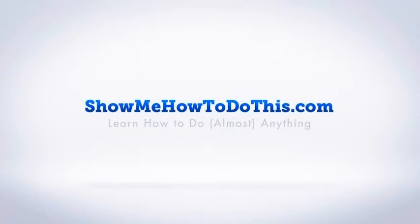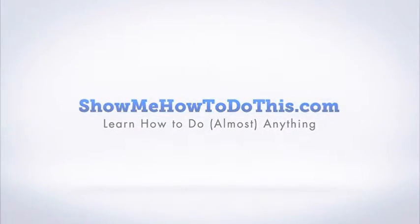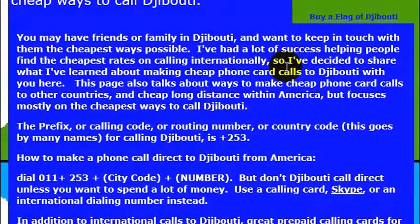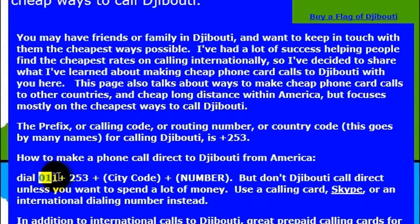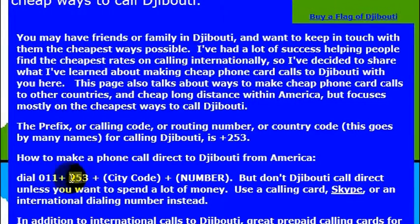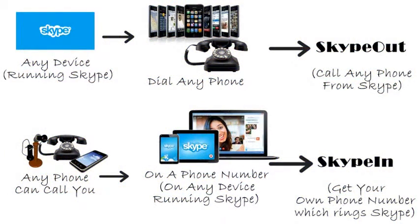Having friends or family in Djibouti is really cool because it's just an interesting place. It's very simple to make a phone call to Djibouti — you just type in 253, that is the country code. You would dial the international dialing code from any phone enabled to make an international call. Usually that's going to be a landline; sometimes cell phones don't allow international calls. You would dial 011 plus 253, that is the country code.